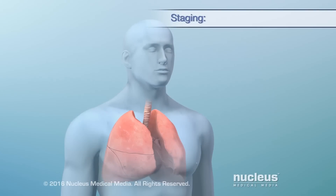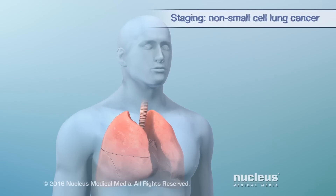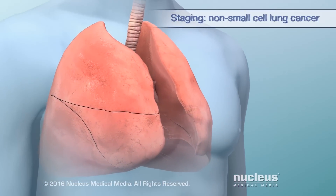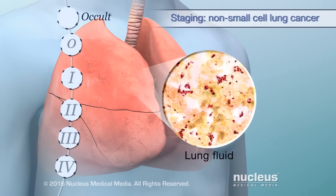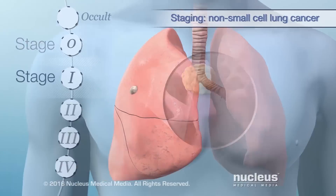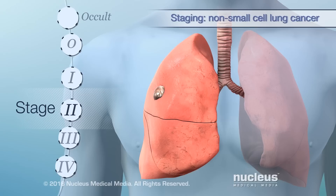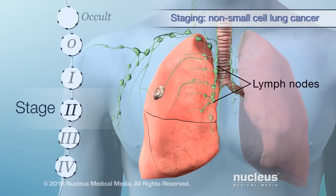If you have lung cancer, your doctor will need to determine the stage or progression of the disease to help plan your treatment. Non-small cell lung cancer has many stages. In the occult stage, cancer cells are found only in lung fluids. In stage 0, abnormal or cancer cells are found in the lining of the airways. By stage 1, a small tumor is found. Then in stage 2, the cancer has grown or spread to nearby lymph nodes or non-lung tissues.